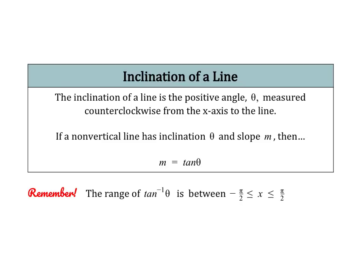The first thing we're going to talk about is how to find the inclination of a line. The inclination of a line is just a positive angle, which we'll call theta, measured counterclockwise from the x-axis — much as you measure an angle in the unit circle from the x-axis going counterclockwise. There is a formula to help us find this: if a non-vertical line has an inclination of theta and a slope of m, then the slope equals the tangent of the inclination.